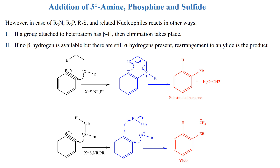Next is the addition of tertiary amine, phosphine, and sulfide. Addition of other nucleophiles such as tertiary amine, phosphine, and dialkyl sulfide takes place in other ways. There are two possibilities.